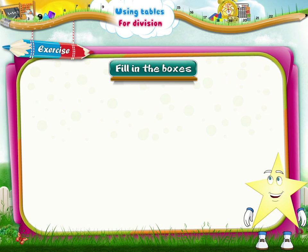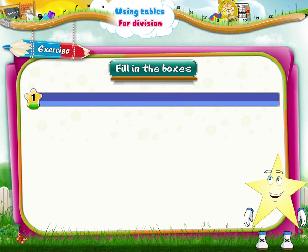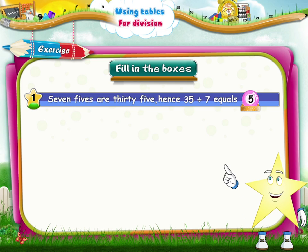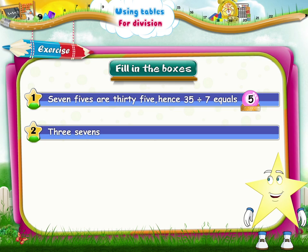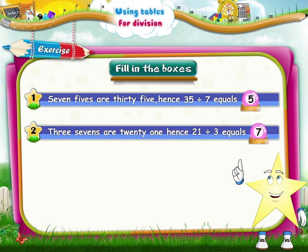And now can you fill in the boxes? The first one has been done for you. Seven fives are thirty-five. Hence, thirty-five divided by seven equals five. Three sevens are twenty-one. Hence, twenty-one divided by three equals seven.